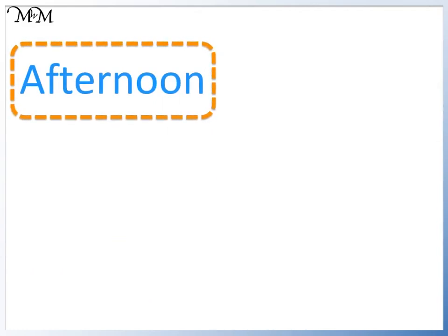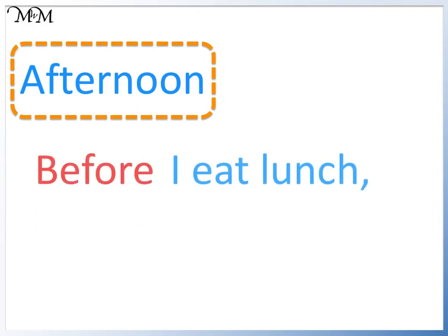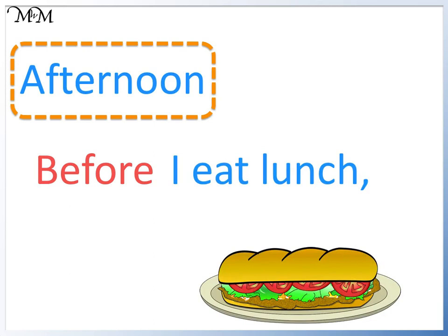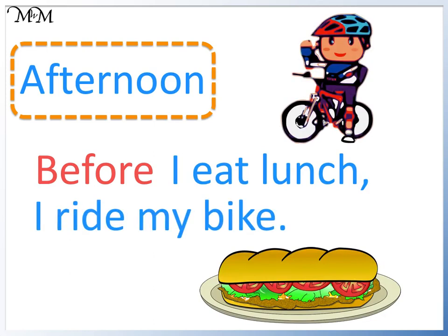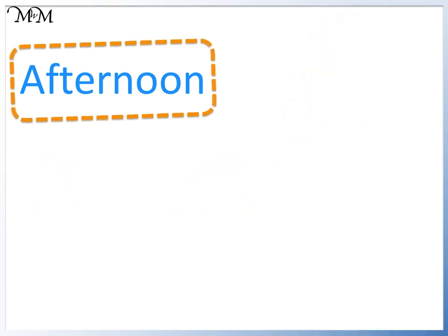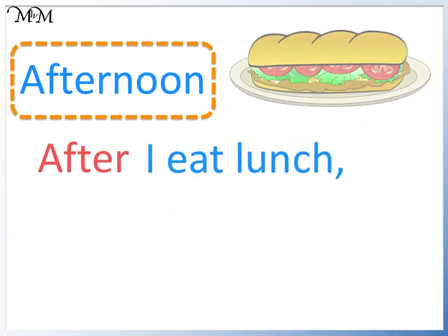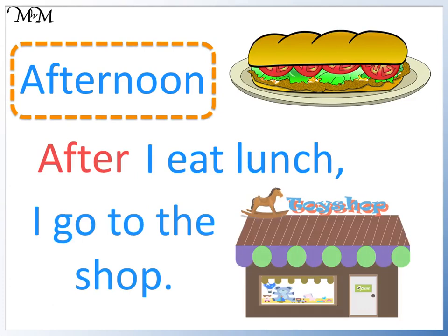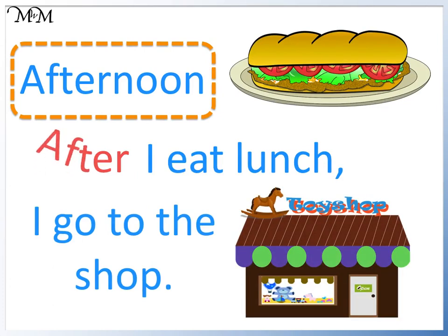Next is the afternoon. It is the middle of the day. Before I eat lunch, I ride my bike. Before lunch means that I ride my bike and then have lunch. After I eat lunch, I go to the shop. After lunch means that I eat lunch and then go to the shop.